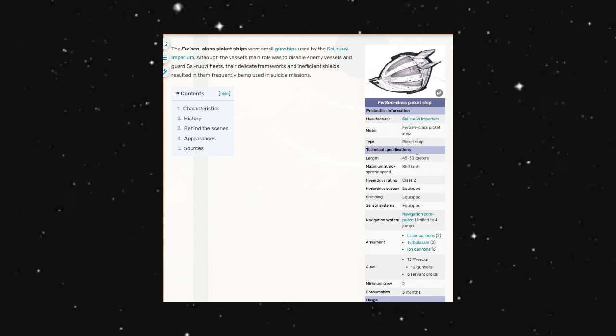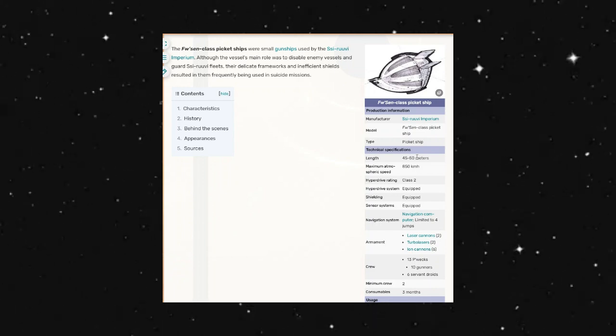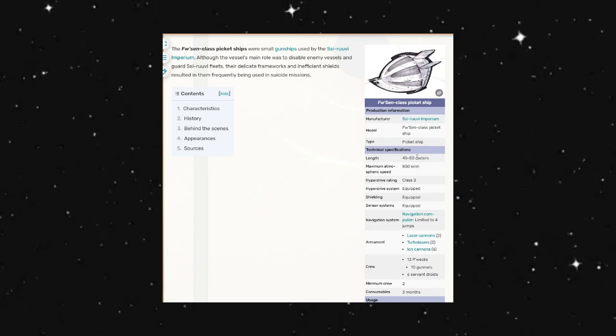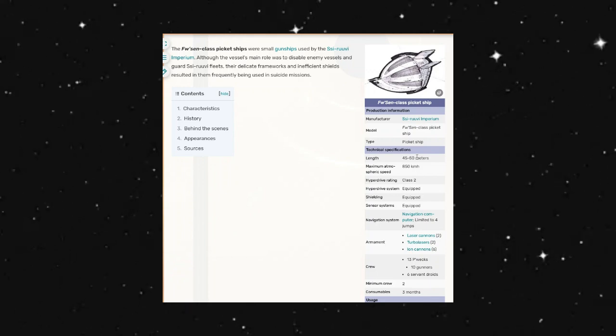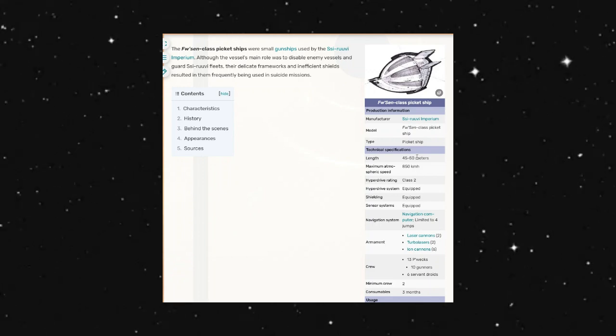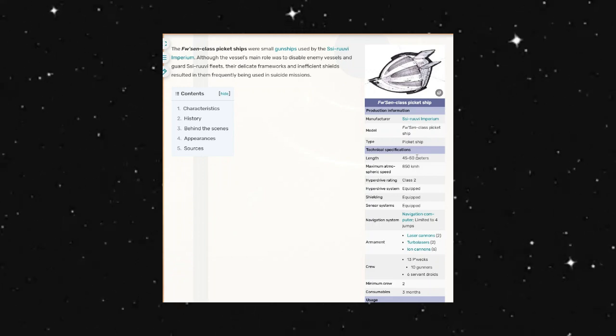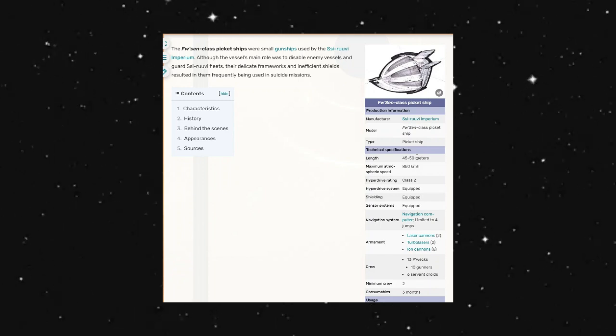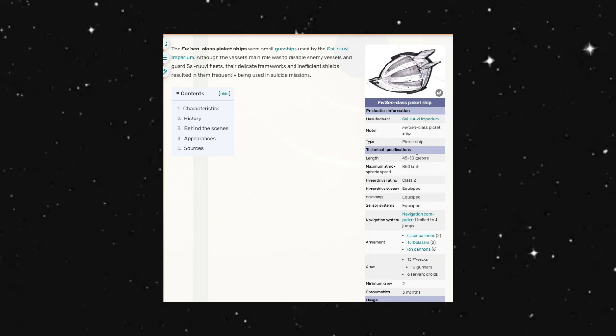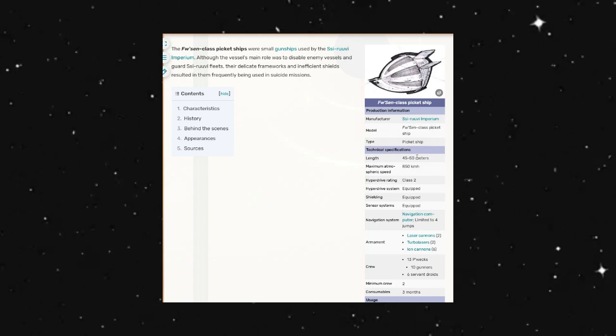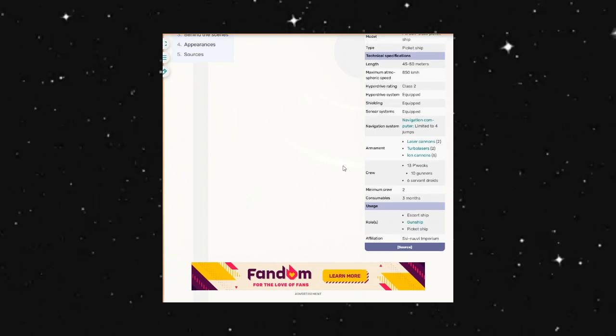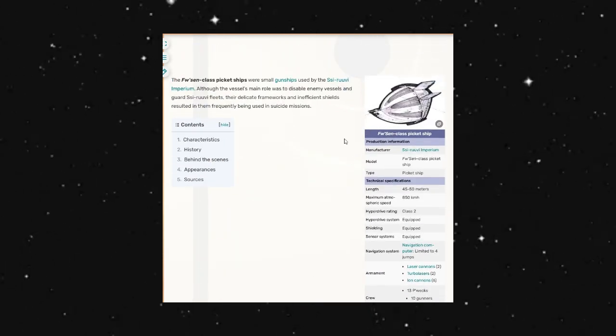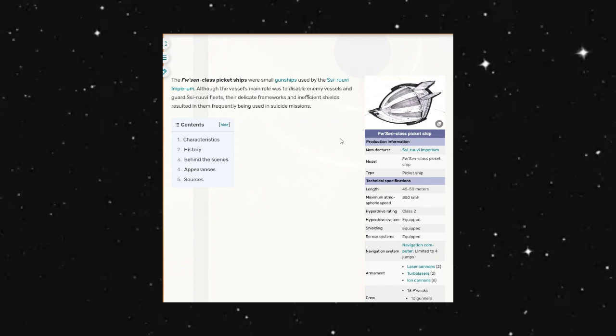These are small gunships used by the Chiviri Imperium, another name I'm going to butcher. Although these vessels' main role was to disable enemy vessels and guard the fleets, their delicate frameworks and inefficient shields resulted in them frequently being used in suicide missions. It's an interesting ship design that we get here, more or less a kind of ball design.